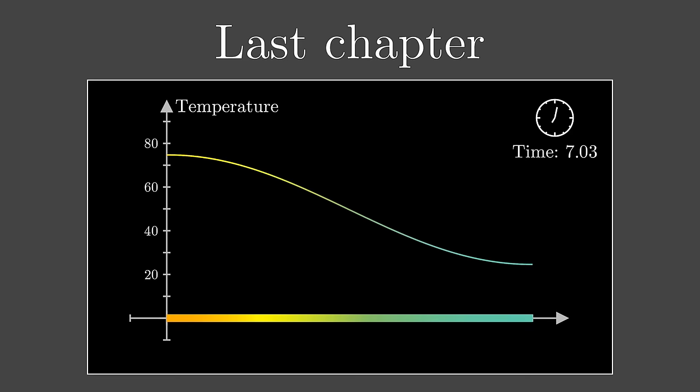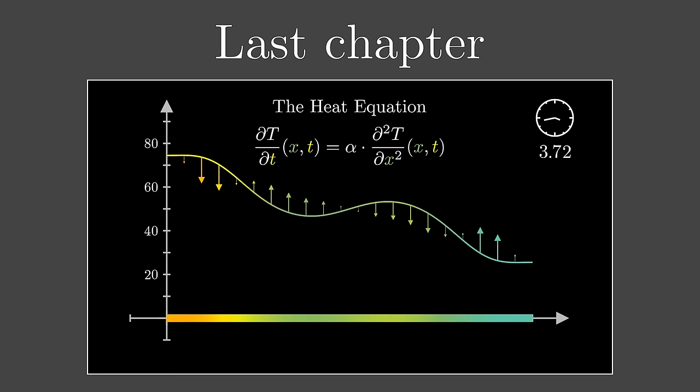We last left off studying the heat equation in the one-dimensional case of a rod. The question is how the temperature distribution along such a rod will tend to change over time, and this gave us a nice first example for a partial differential equation.